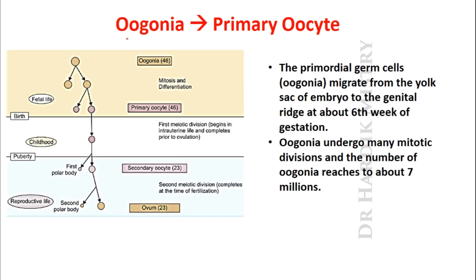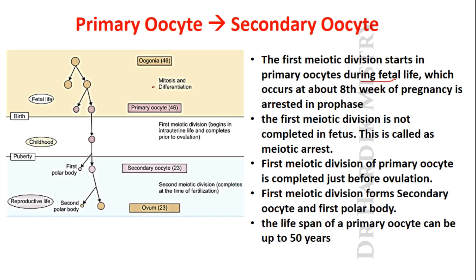The first step of oogenesis: oogonia are converted to primary oocytes. The primordial germ cells, known as oogonia, migrate from the yolk sac of the embryo to the genital ridge at about six weeks of gestation. The oogonia undergo many mitotic divisions and the number of oogonia reaches about seven million. At the end of this mitosis and differentiation, the oogonia are now known as primary oocytes.